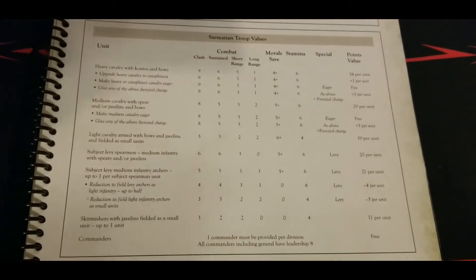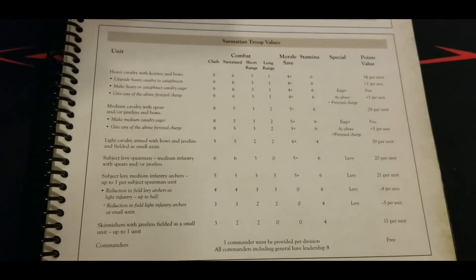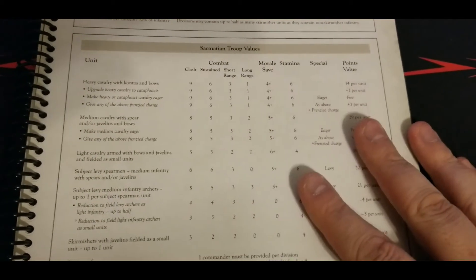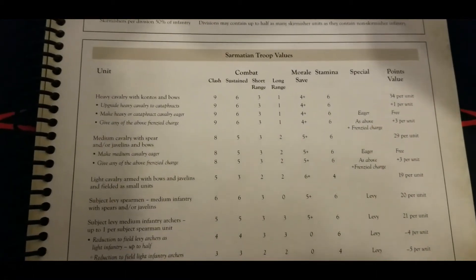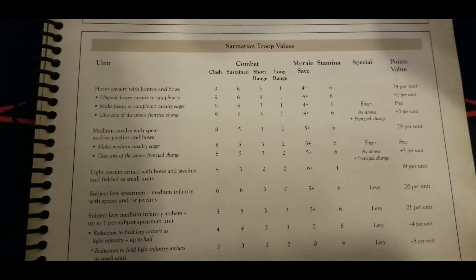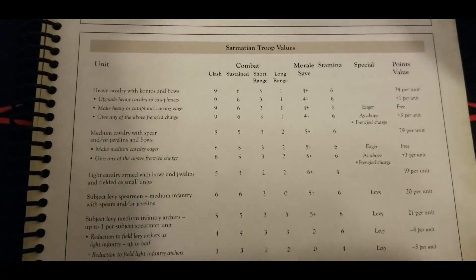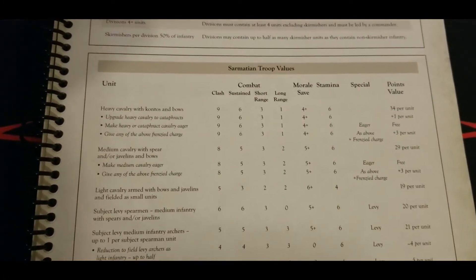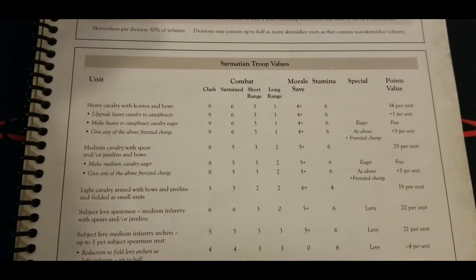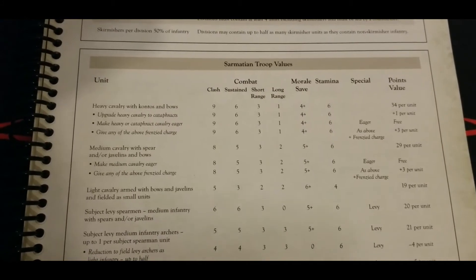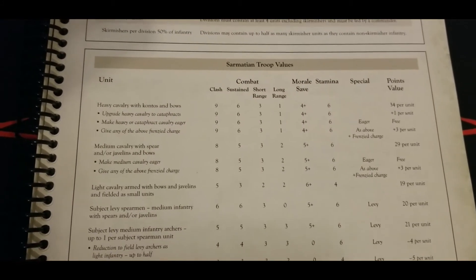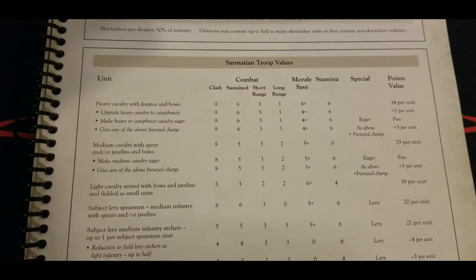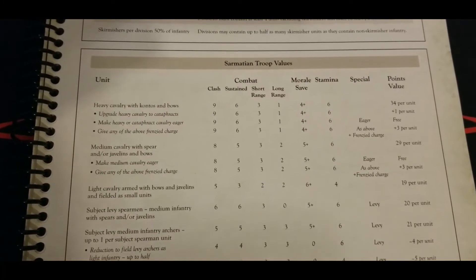Let's jump into the list. It's not very long, just focused on delivering cataphract-type cavalry units to the opponent and following up with a bit of infantry. Starting off: heavy cavalry with contos and bows. What a combination, about as offensive as you can get.